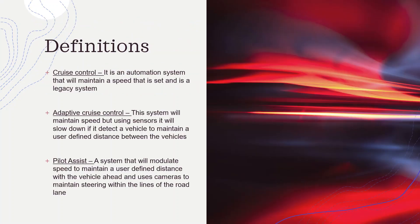Here is the difference between the three different systems. Cruise Control only allows you to set a speed, for example 60 miles an hour. Adaptive Cruise Control allows you to set a speed and the following distance with the car in front — for instance, 60 miles an hour and one car length. If a car comes in front that is going slower, it will vary the speed to keep that one car length.